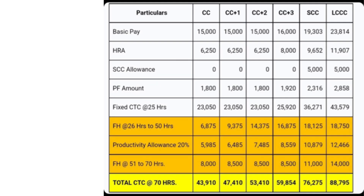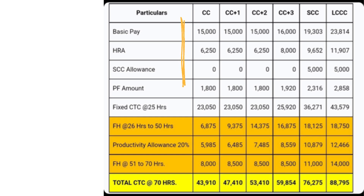In this video we're covering the salary structure of a SpiceJet airline cabin crew. Here you can see CC, which is when you start as a fresh cabin crew. CC+1 is someone with more than one year of experience, then CC+2, CC+3. Salary keeps increasing within the first three years. After three years, things change when you become SCC (Senior Cabin Crew) or LTCC, which is your checker on board who flies as well as checks the cabin crew.